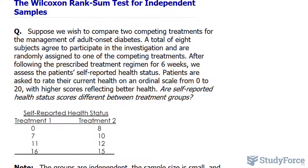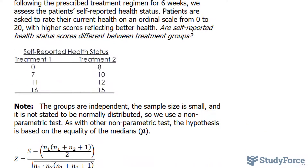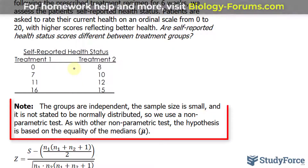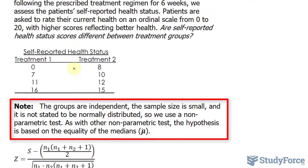Take a look at the data. We have, in this column, the status for those that were in treatment one, and in this column, the status of those that were in treatment two. The groups are independent, the sample is small, and it is not stated to be normally distributed. This is why we use a nonparametric test such as this one.